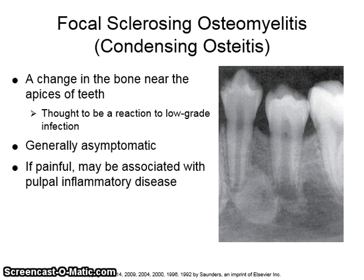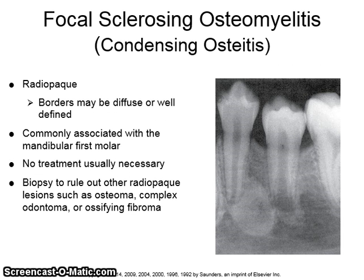Focal sclerosing osteomyelitis, otherwise known as condensing osteitis, is a change in the bone near the apex of teeth. It is thought to be a reaction to a low-grade infection. It is generally asymptomatic; if painful, it may be associated with pulpal inflammatory disease. The radiographic appearance is radiopaque, with borders that may be diffuse or well-defined. It is commonly associated with the mandibular first molar. No treatment is usually necessary.